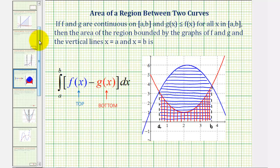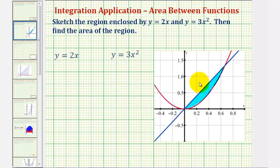So going back to our example, notice how the linear function is on top and the quadratic function is on the bottom. So we'll have the integral of 2x minus 3x squared. But now we also have to find the limits of integration, which will be the x coordinates of these two points of intersection.